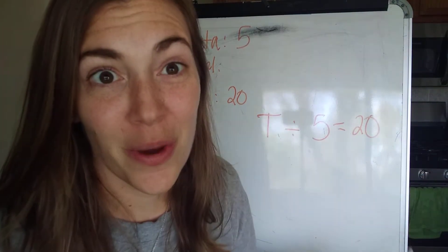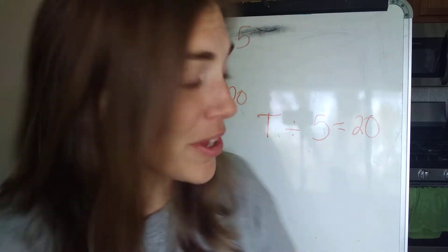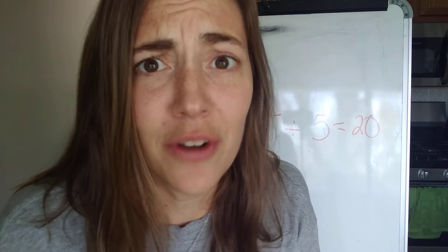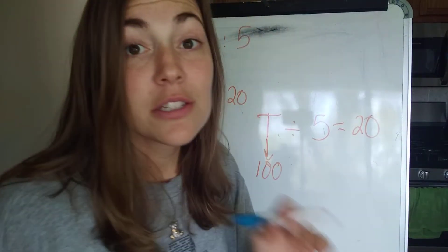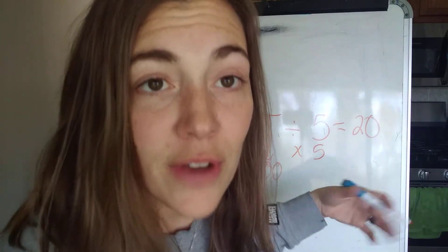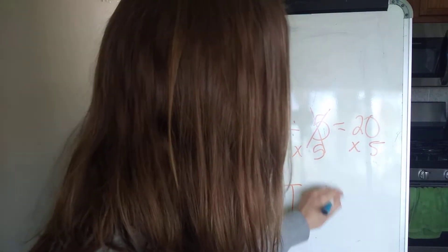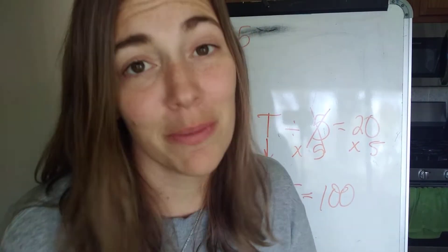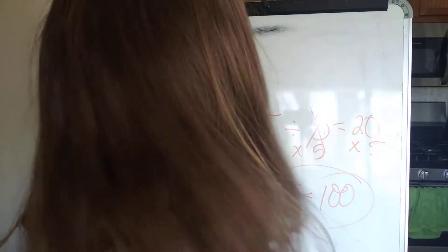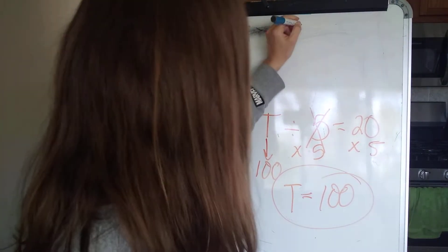So what divided by five equals twenty? I know you guys know this — a hundred divided by five is twenty. So we know that our total is going to be one hundred. Instead of dividing by five, I need to get the total by itself, so I multiply by five — those cancel out — and my total equals one hundred. So instead of dividing being our last step, our first step is to multiply.